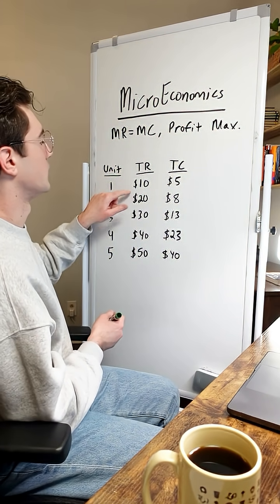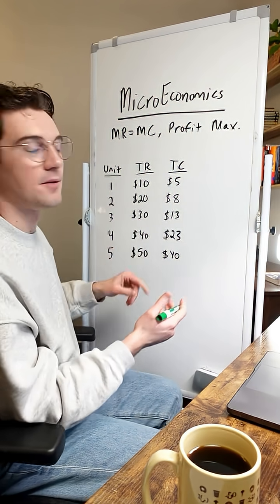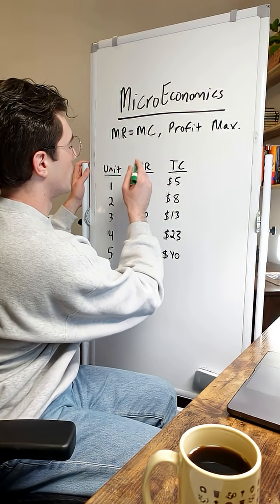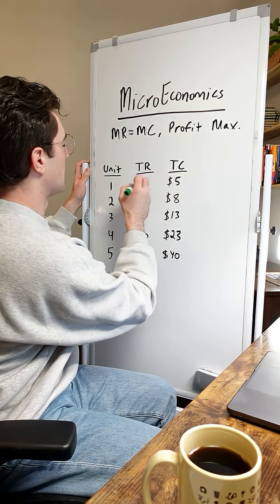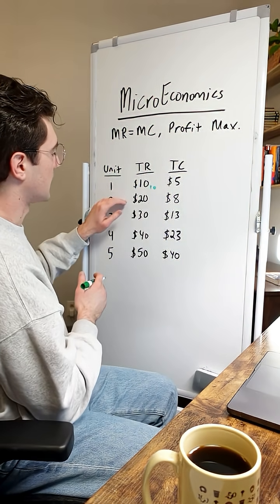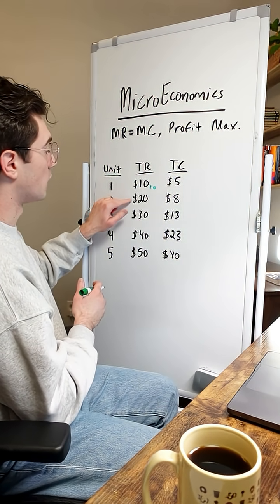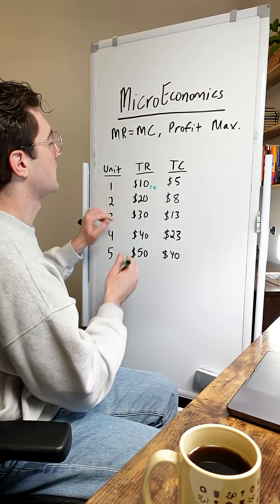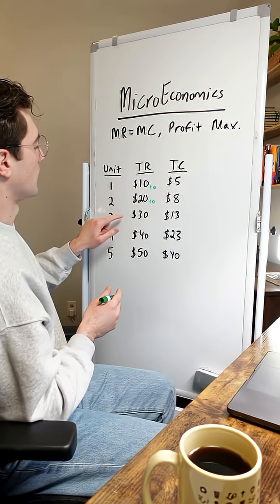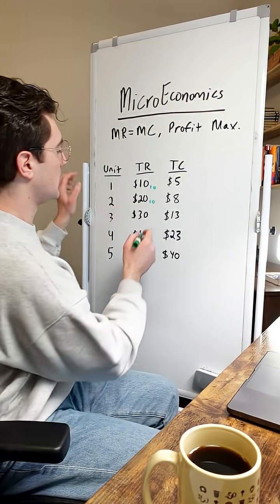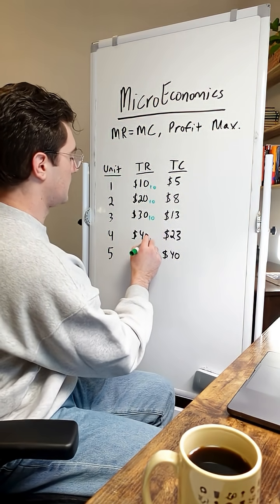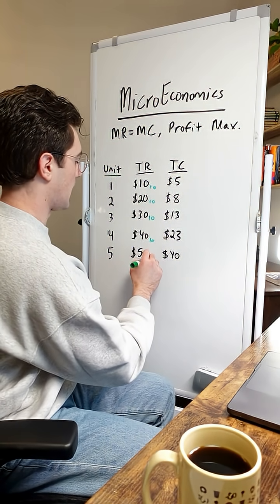We'll start with the first unit. Theoretically, the total revenue at zero units is zero, so the marginal revenue at the first unit is $10. For the second unit, 20 minus 10 — that's also $10. For the third unit, 30 minus 20 — that's also $10. This is going to be $10 throughout.